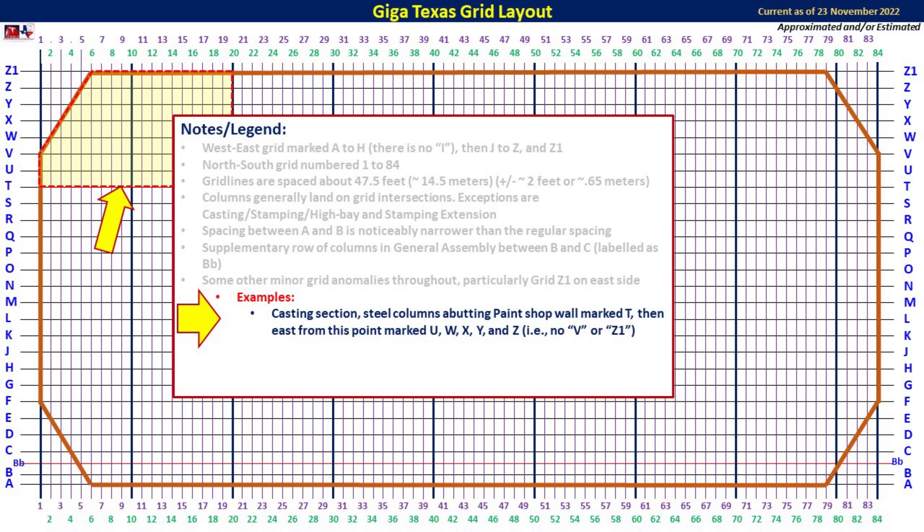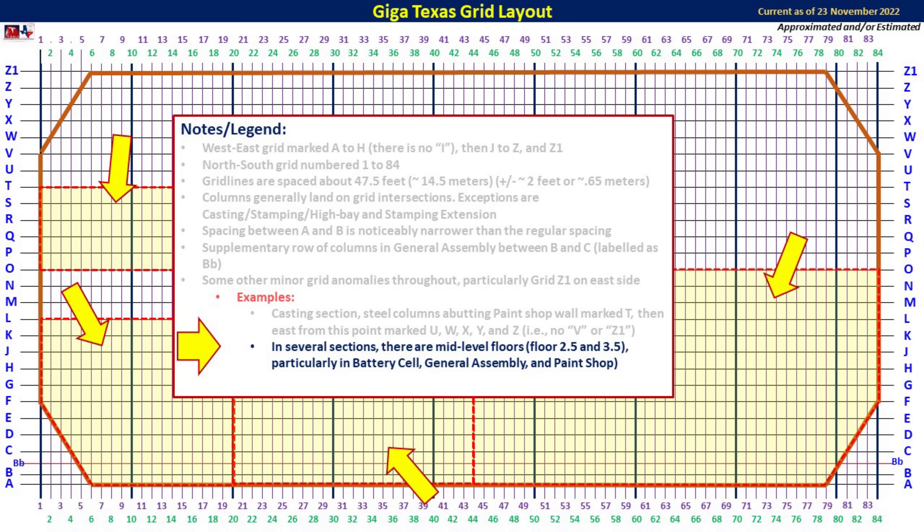Here's another area of discontinuity in the casting machine structure, where they used steel columns abutting the paint shop — they are marked T. Then from east at that point, they are marked U, W, X, Y, and Z, but there is no V and there is no Z1 for some reason. Additionally, there are up to four floors generally, but in several sections — including the battery cell, the general assembly, and the paint shop — there are floors two and a half or three and a half.